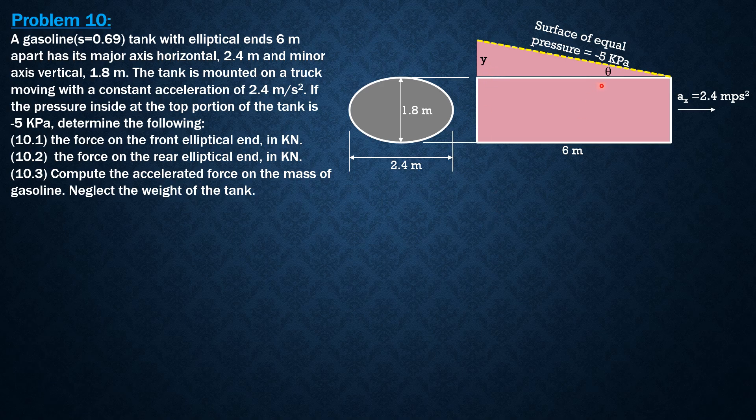Then tangent theta is ax over g, and it is also equal to y over 6. So for the first question, tangent theta is ax over g and it is equal to y over 6, where ax is 2.4, g is 9.81. Then we can compute y equal to 1.468 meters.